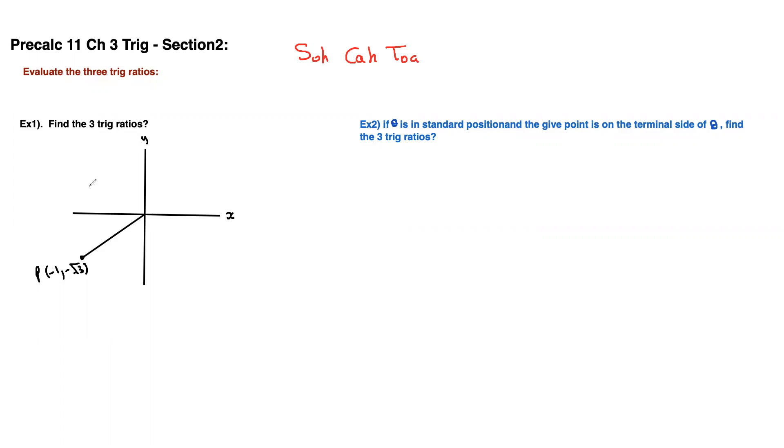If I'm doing this question right here asking me to find the three trig ratios of this point, the first thing I have to do is bring up a vertical with the x-axis. Never do it this way with the y-axis. It's always with the x-axis. Now I know the x value is negative 1 and the y value is negative root 3.